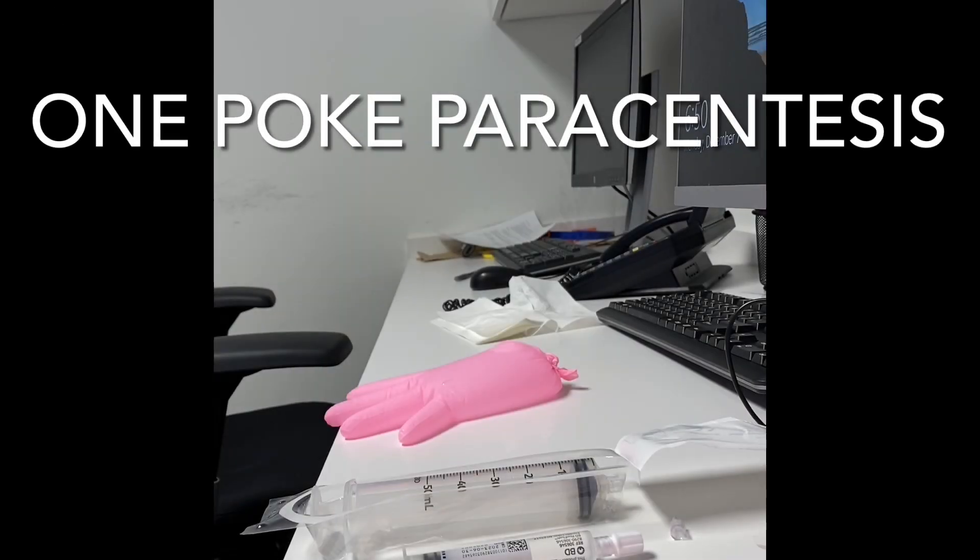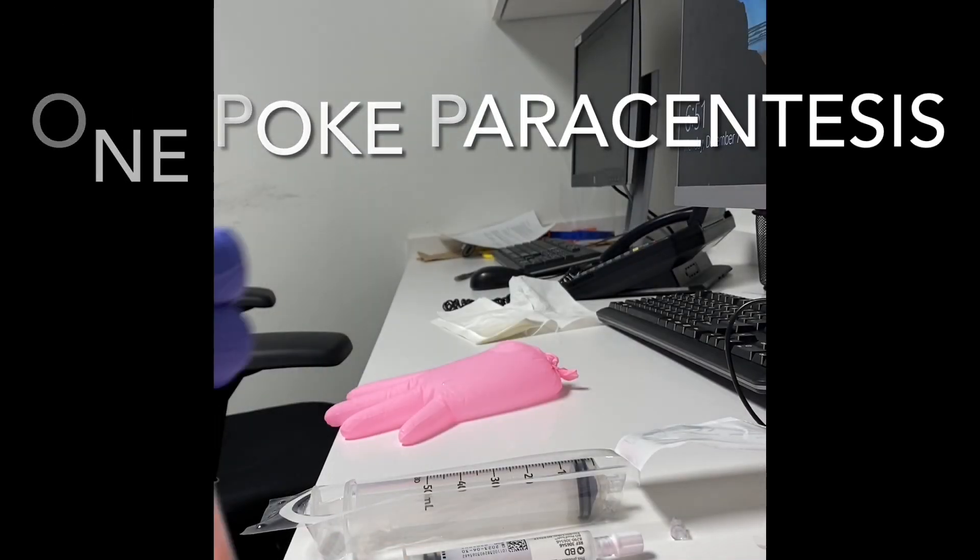Here's an example of how to use the 20 gauge angiocath to do a paracentesis with just one poke. Here's the angiocath we'll be using.